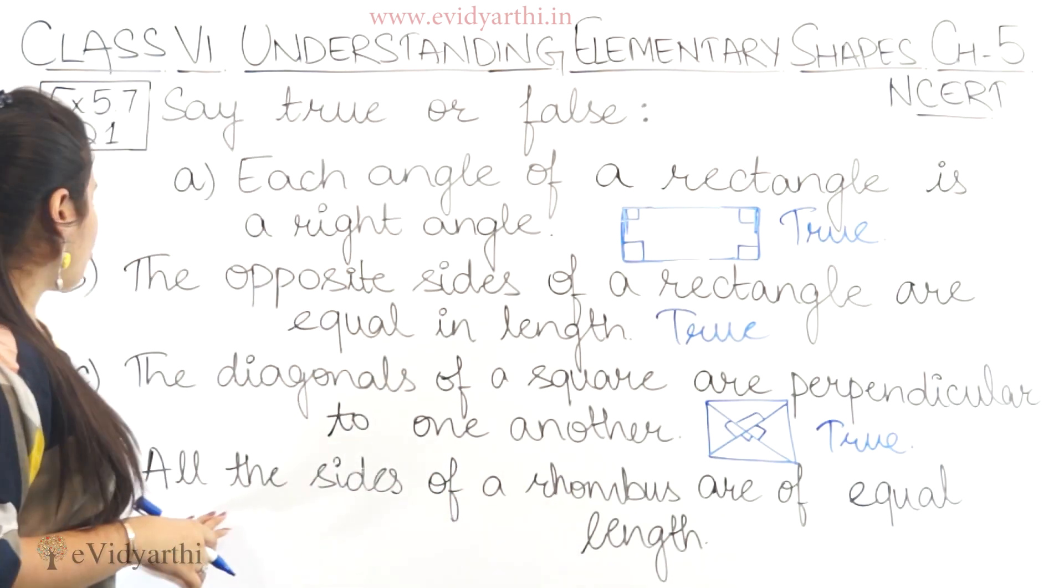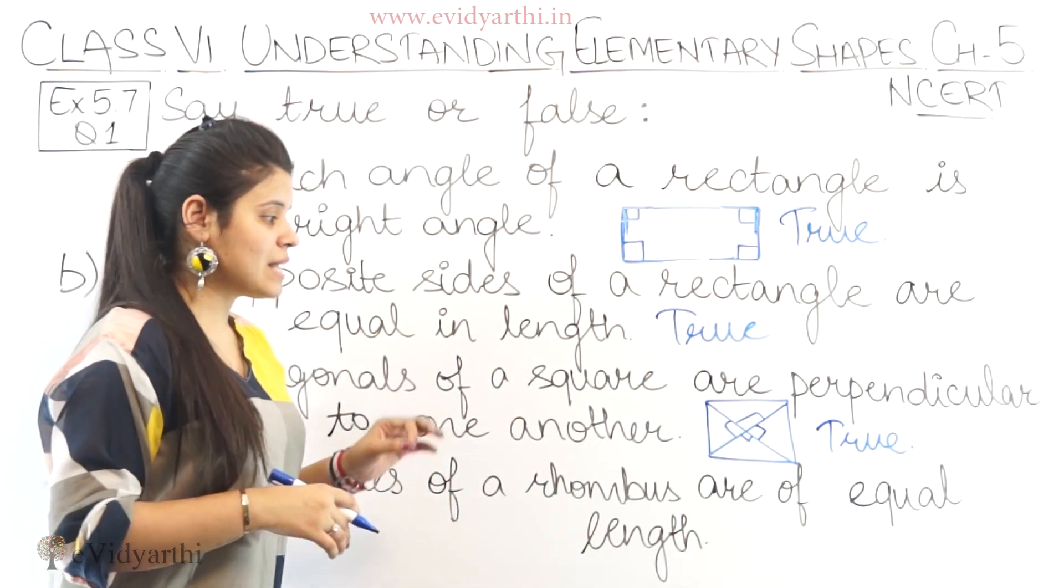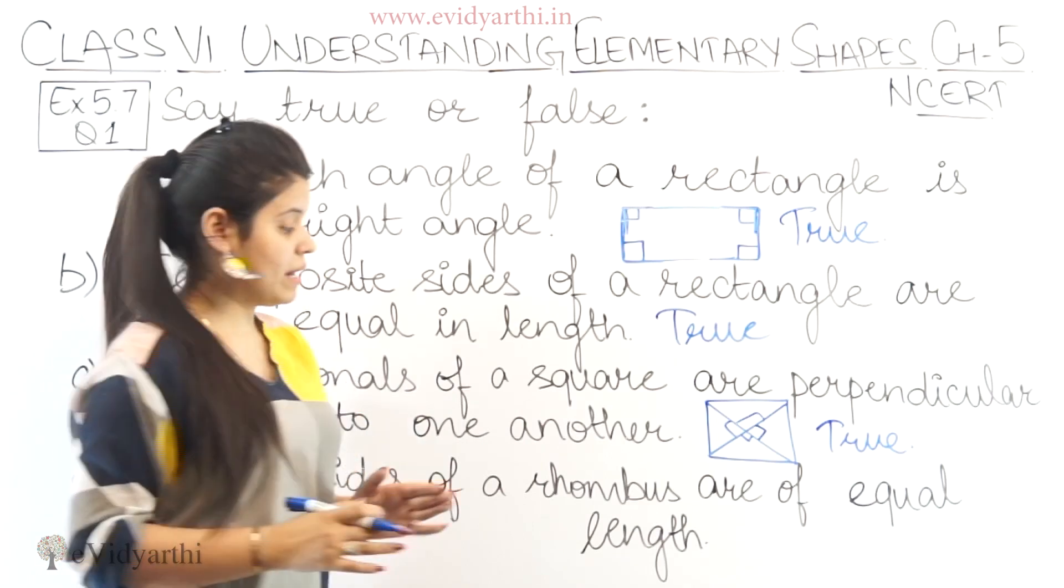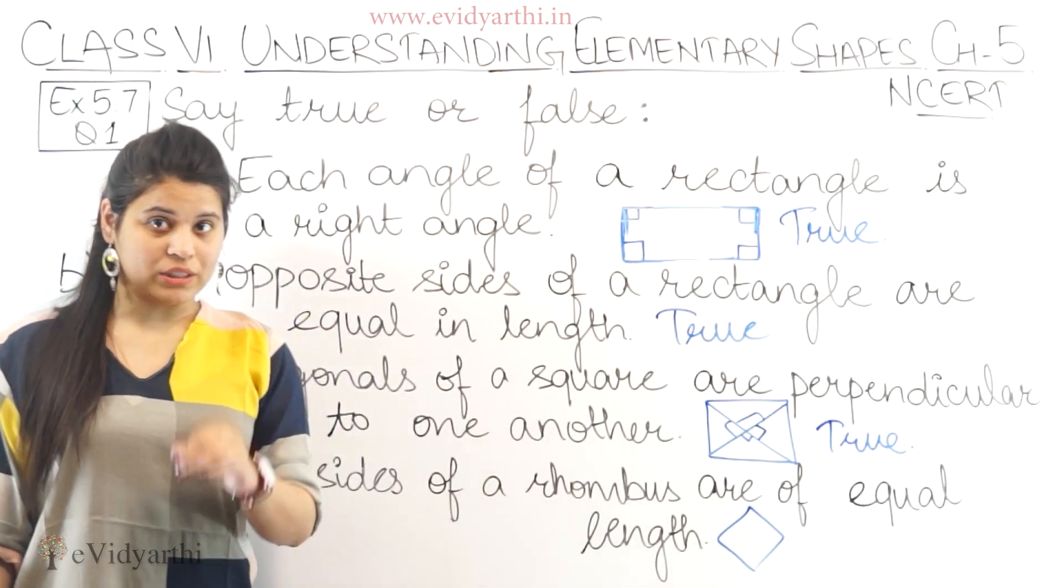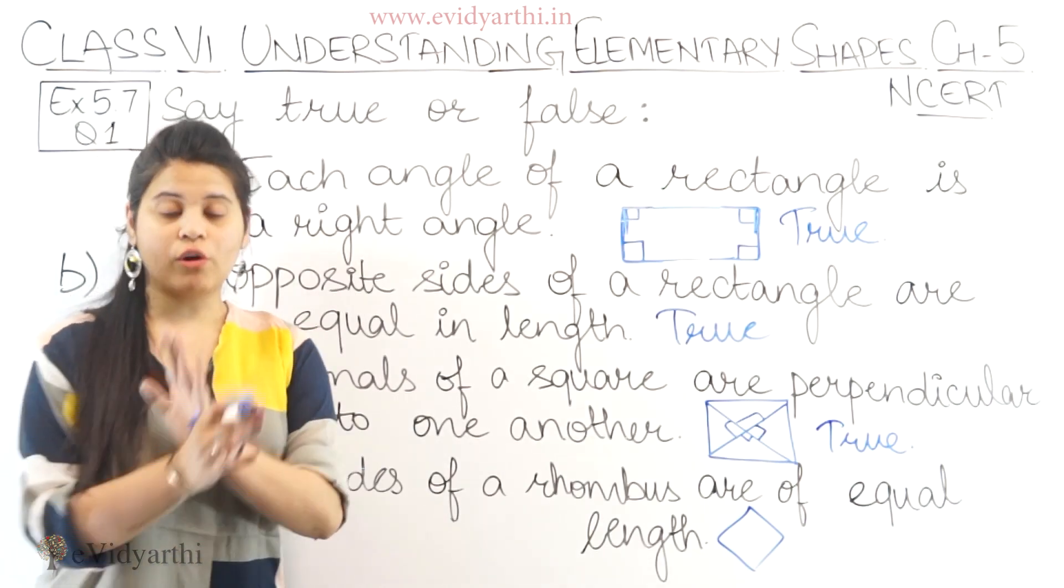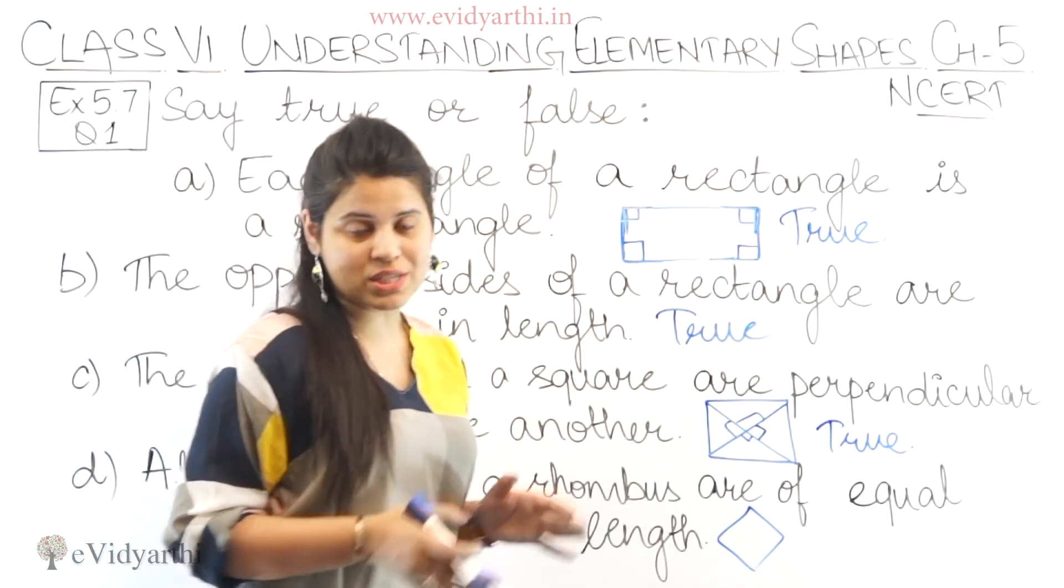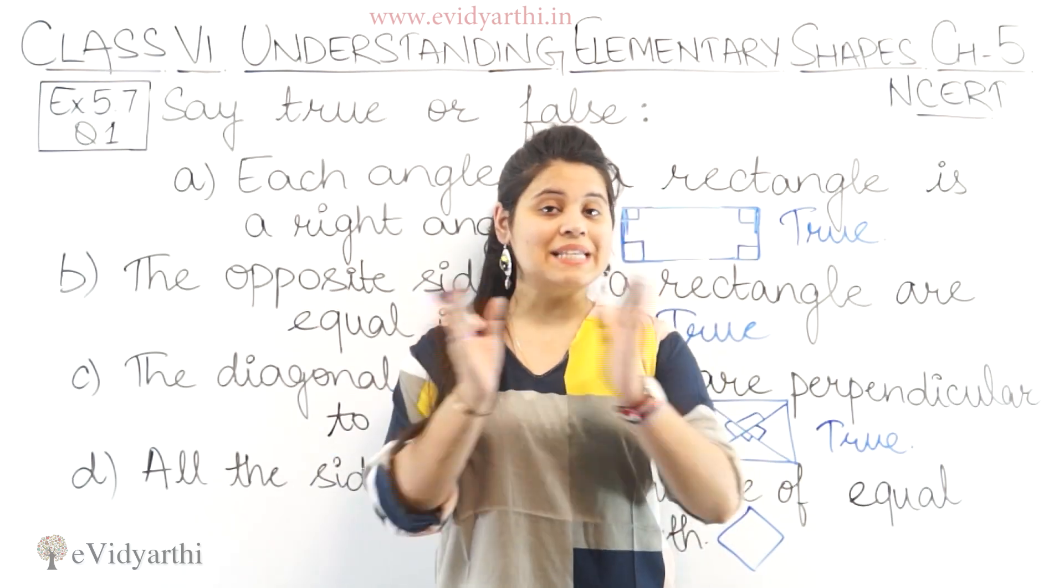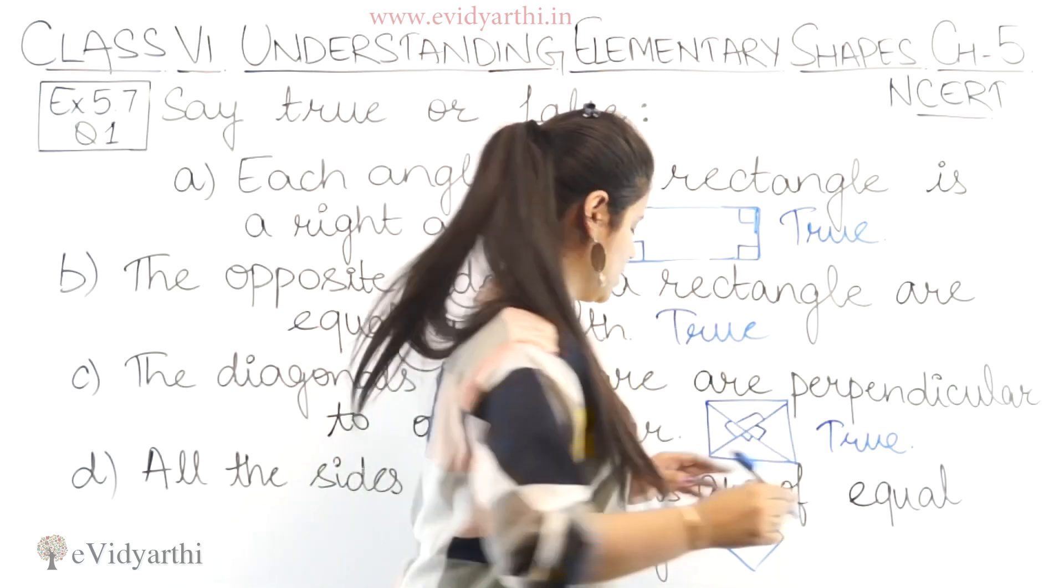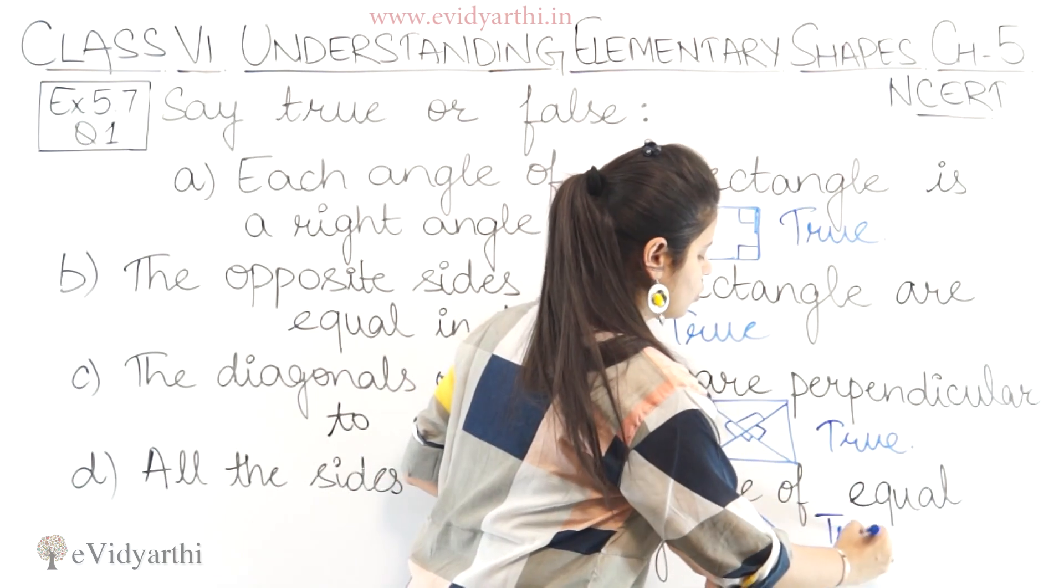Coming to the fourth one, all the sides of a rhombus are of equal length. Jo rhombus figure hoti hai, uski saari sides equal hoge hai. This is again true. All the sides of a rhombus are equal. Jaise square ki saari sides equal hoge hai, usi tarah rhombus ki bhi saari sides equal hoge hai. So this statement is also true.